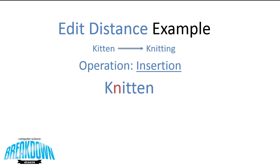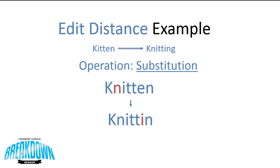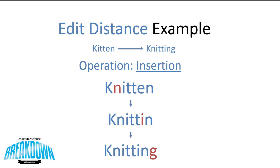There is a commonality: both E and I are followed by an N. So we can replace the E with an I — our second operation is a substitution. Now we can see that we're pretty close, and the final operation is to append the G at the end of the string. After these three operations, the distance between kitten and knitting is 3.